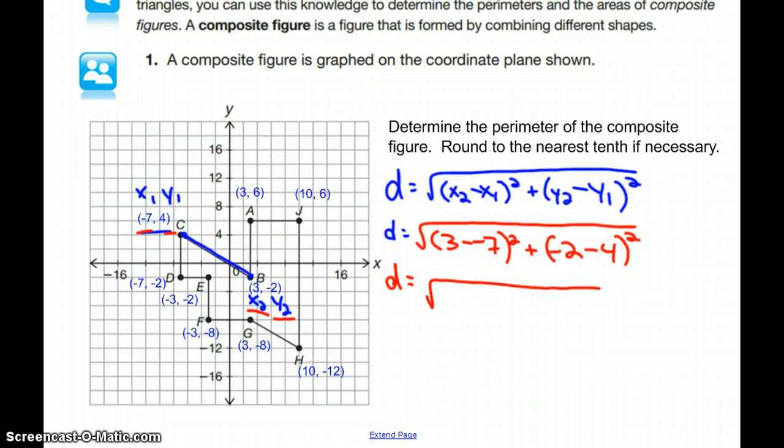Now going through and simplifying, 3 minus negative 7, that's the same as 3 plus a positive 7, so that's 10, and negative 2 minus 4 is negative 6. Following order of operations and squaring those next, 10 squared is 100, negative 6 squared is going to be 36.